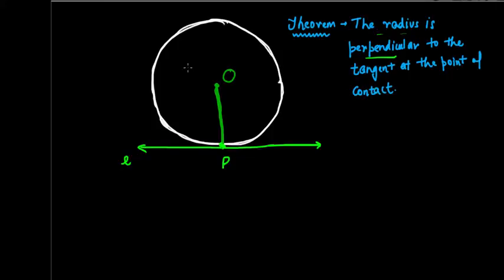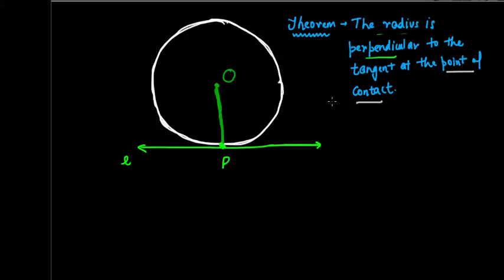We have learnt in the last video that a tangent is a line which touches the circle at one distinct point. That one distinct point at which the tangent touches the circle is called the point of contact, and we now have to prove that the radius is perpendicular to the tangent at that point of contact.